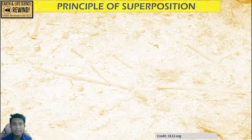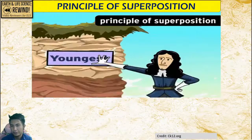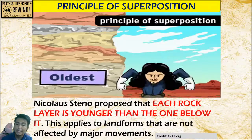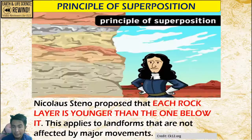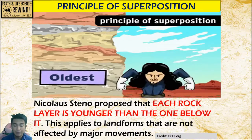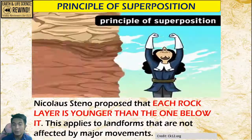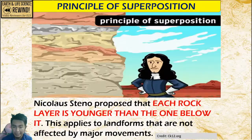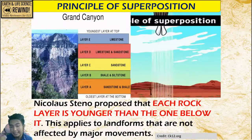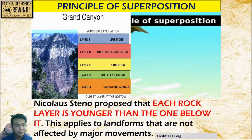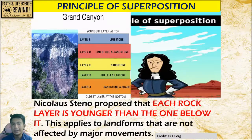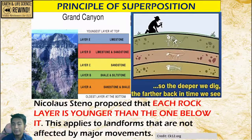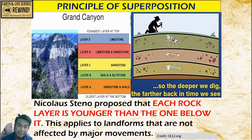Let's start with superposition. Nicholas Tenno proposed that each rock layer is younger than the one below it. The oldest rock is always at the bottom and the youngest rock is always on the topmost layer. You can see that in the Grand Canyon, and you can actually put them in order — how old the oldest layer and the youngest layer in this rock formation. Generally, the deeper we dig, the farther back in time we see.